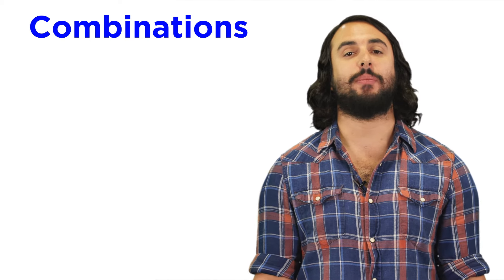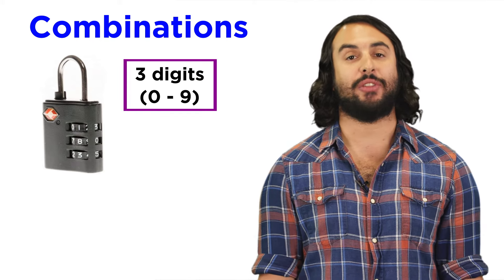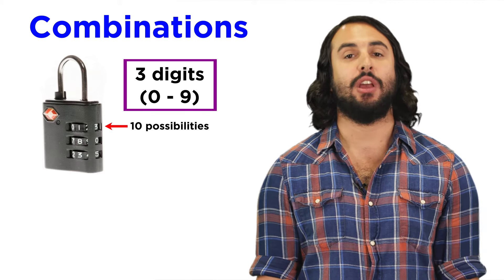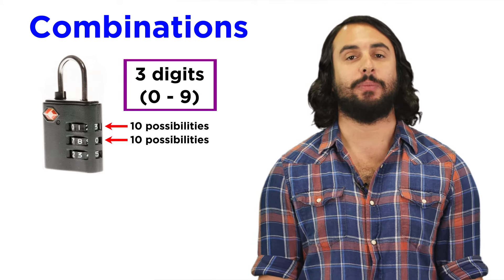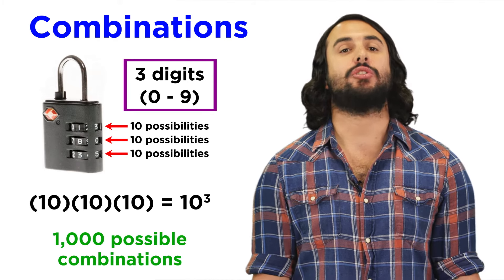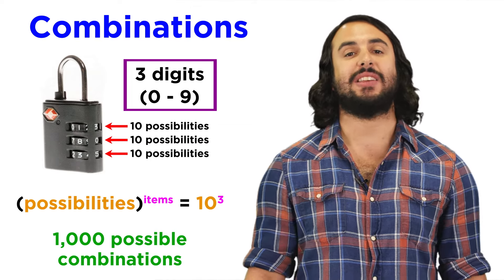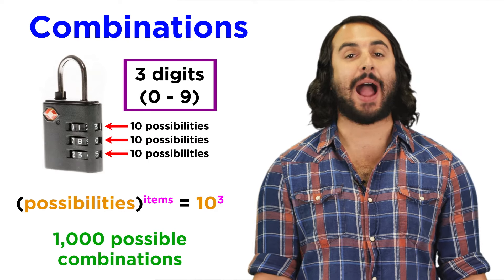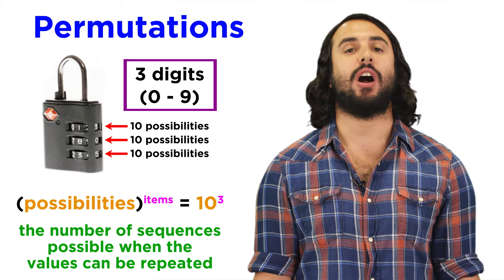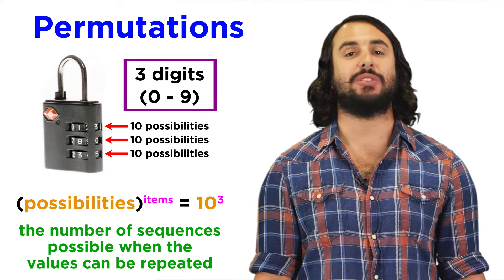What are some other ways to think about combinations? How about a combination lock? If there are three digits on the lock, each with ten possible values, then we have ten possibilities for the first number, ten for the second, and ten for the third. Ten cubed is one thousand, so there are one thousand possible combinations for this lock. In general, it's the number of possibilities per item raised to the power of the number of items. This gives us the number of permutations, or specific sequences possible when values can be repeated.